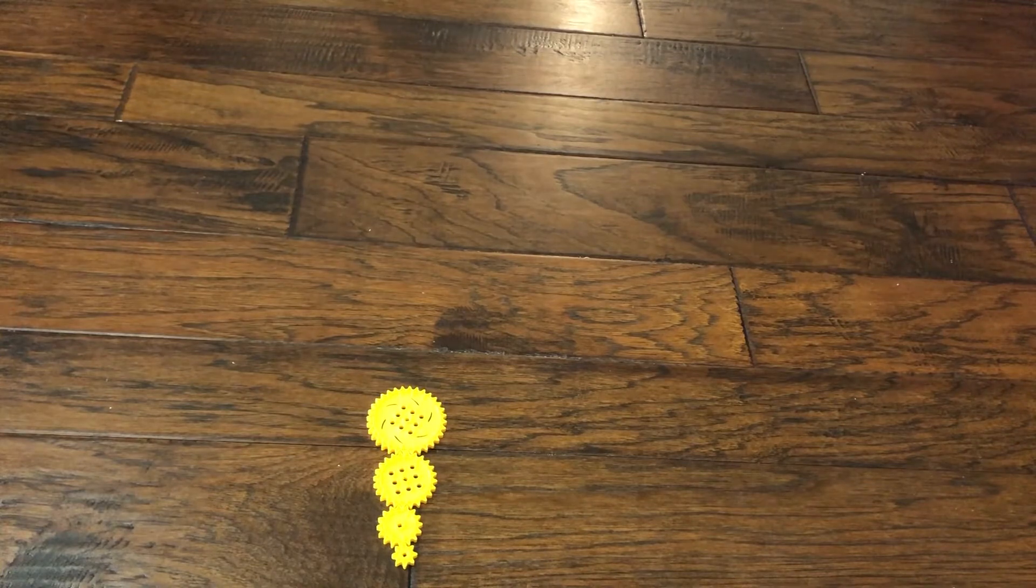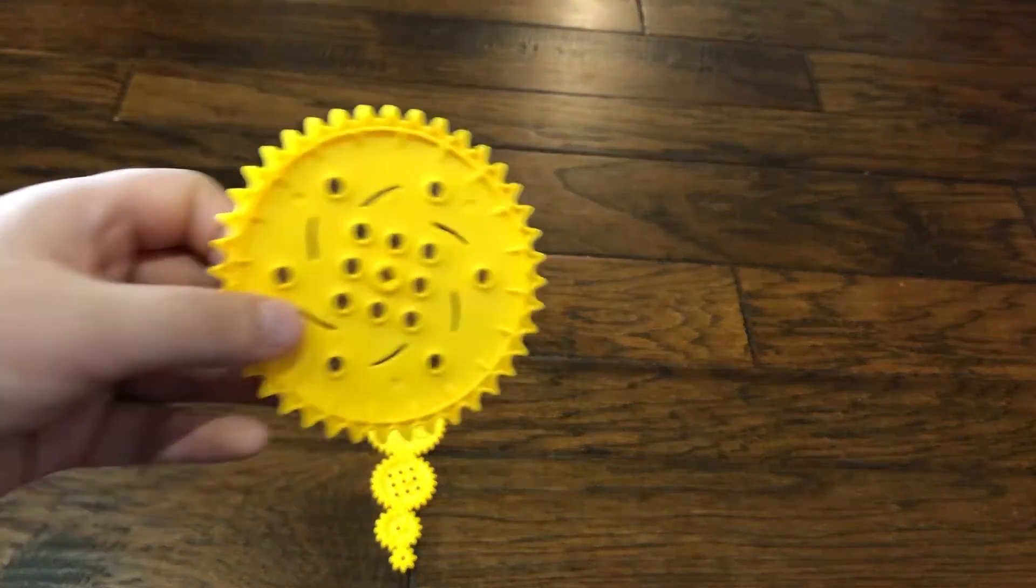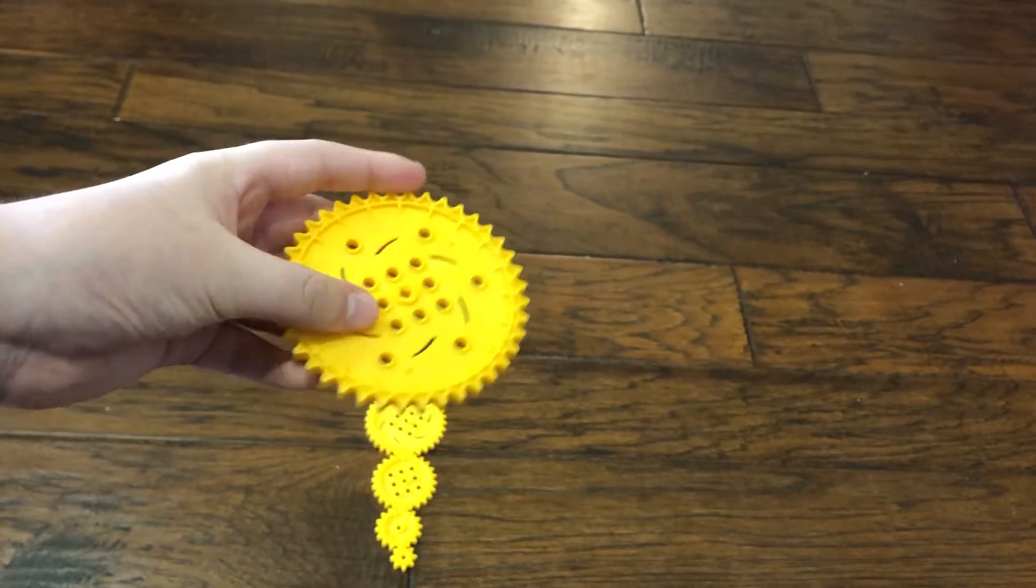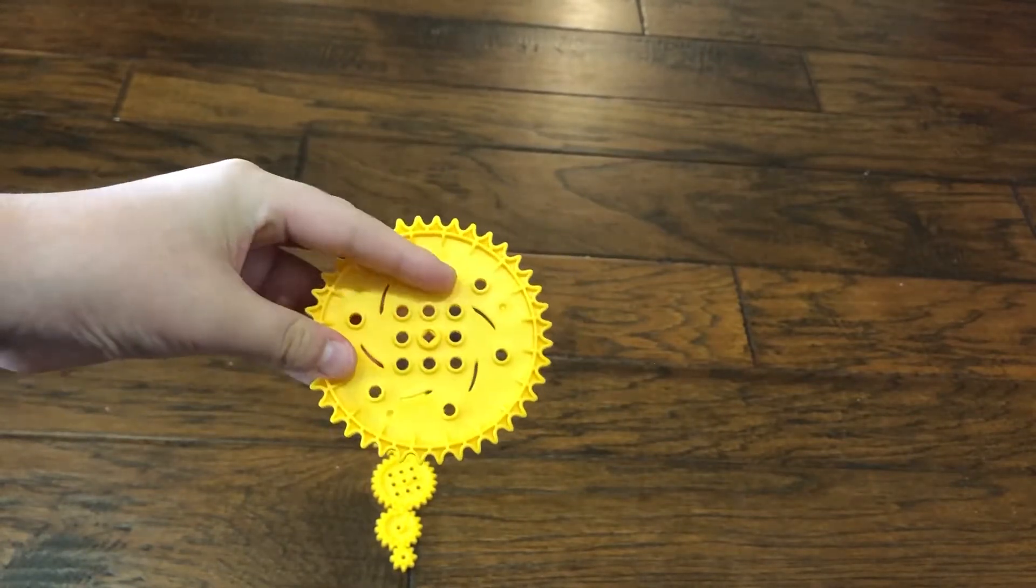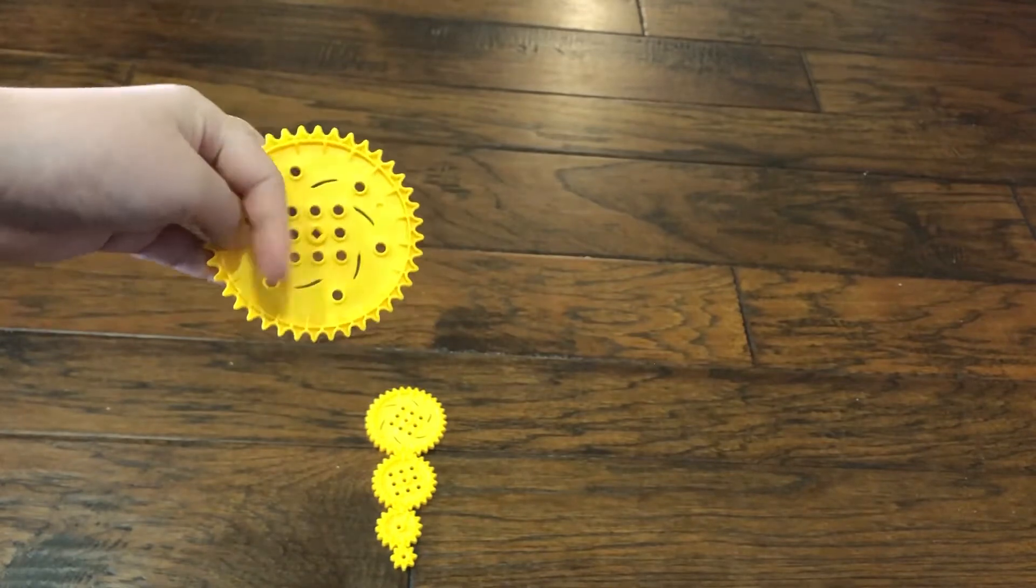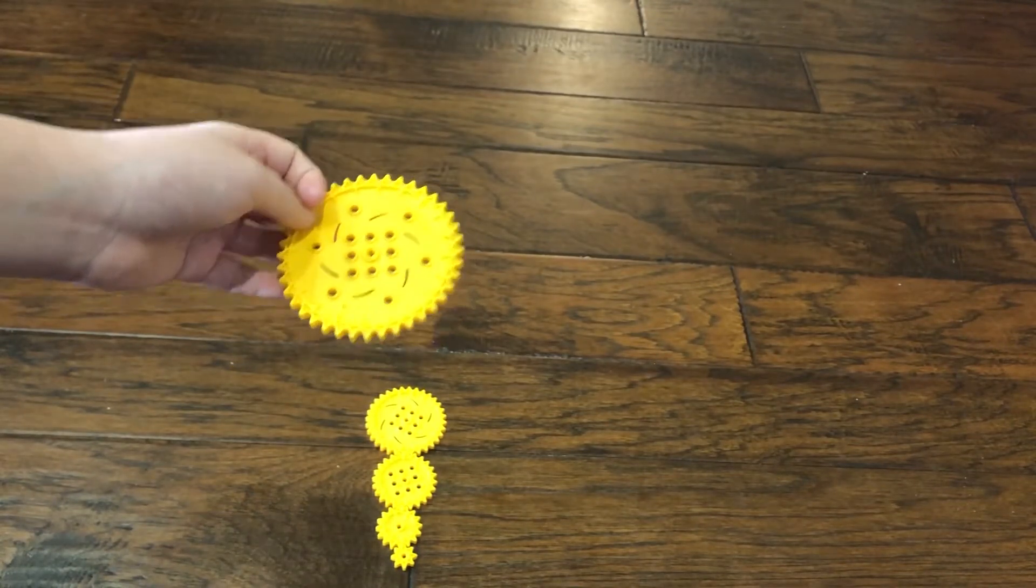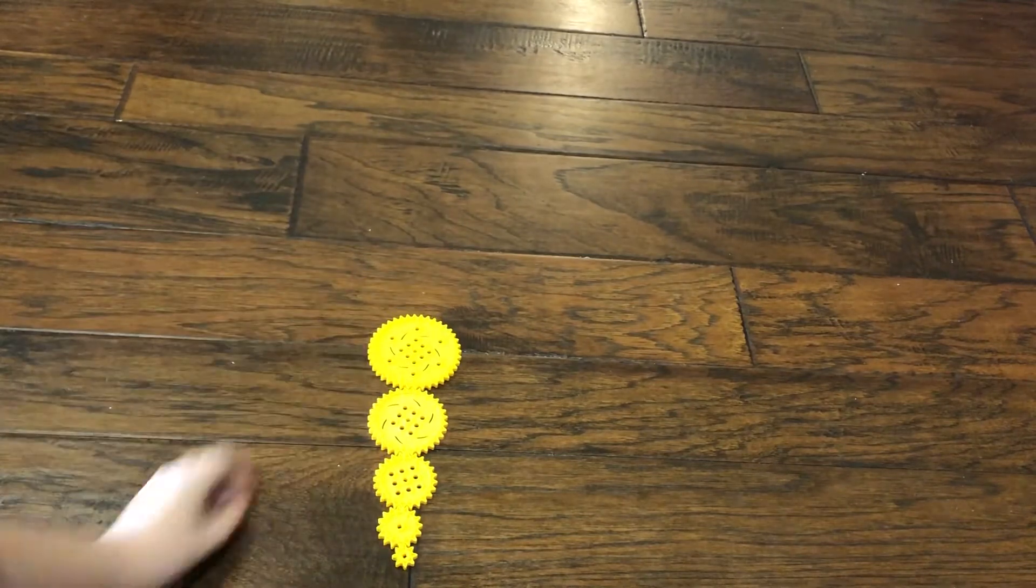And then the biggest sprocket is the 40-tooth sprocket. It has some lines here too, and it also has holes on the very outside which can add a lot of other parts.